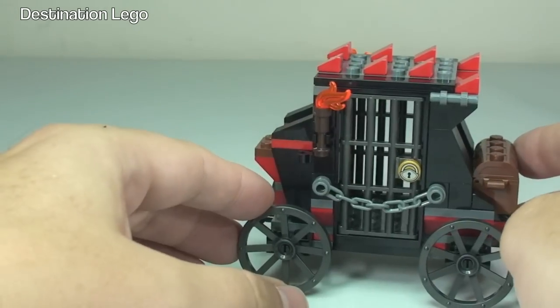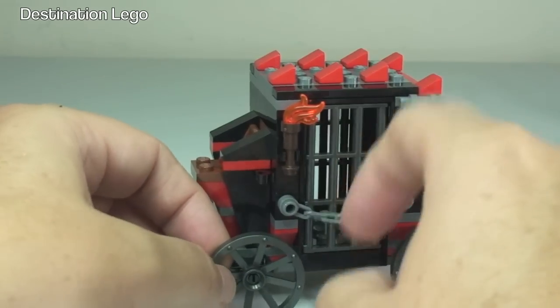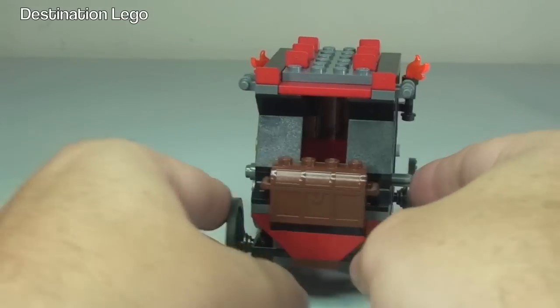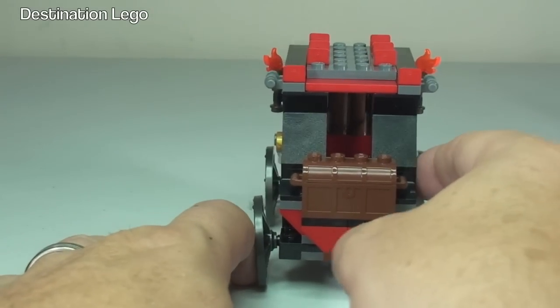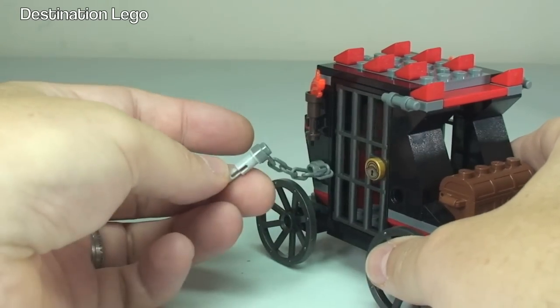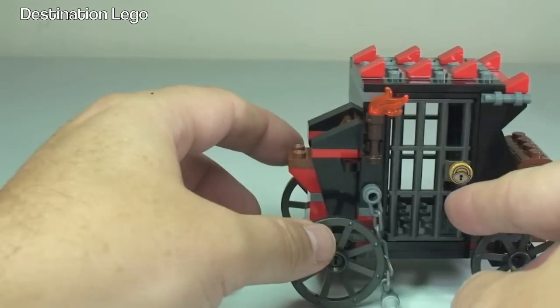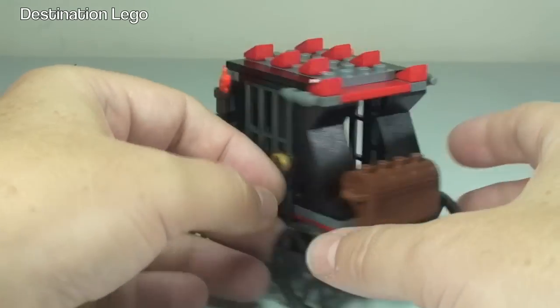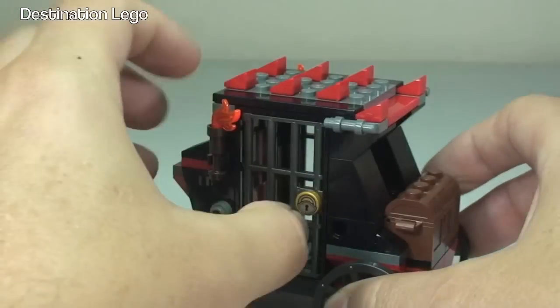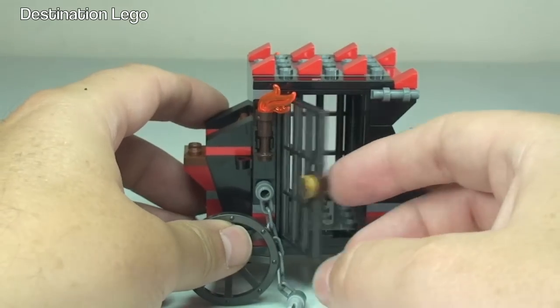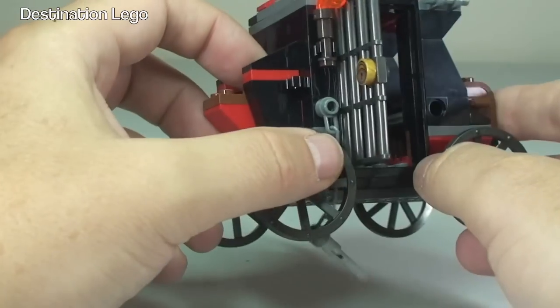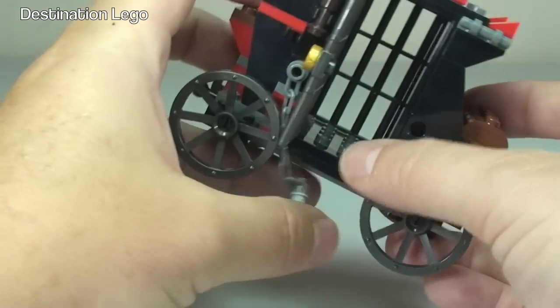So one of the features on this set is to get into here. You can see it's chained up, so how do we get the chain off? Well, over here pointing out you can see this piece. If we push this, we should see this fire out, which you did there. It's basically a flick fire missile which is attached to that chain, and that simply goes to that hole. Obviously the piece that I just pushed in shoots that out. This now means we can get in obviously to the inside of the carriage, and the door just simply opens like so. We can obviously put one of our minifigures in there if we so wanted to as a prisoner.